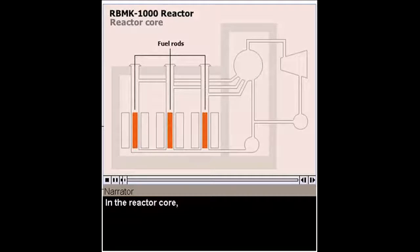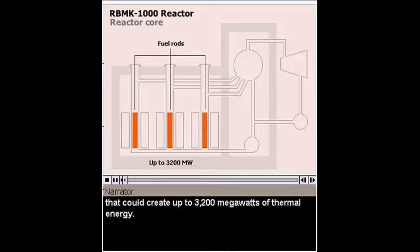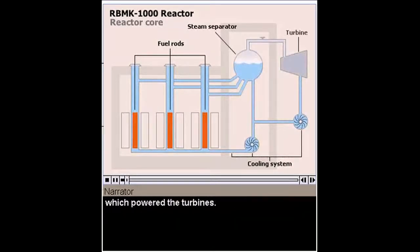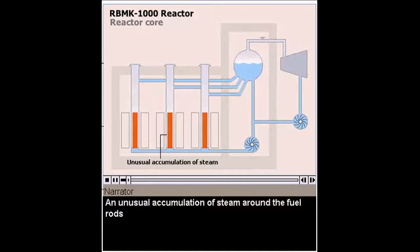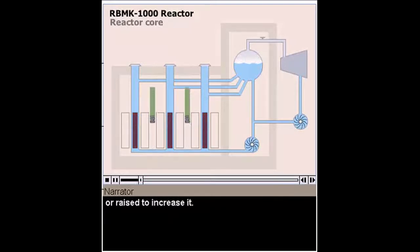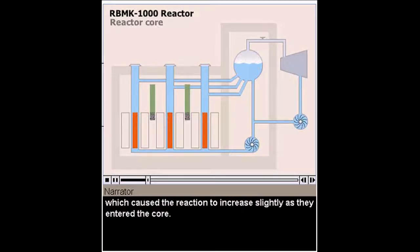In the reactor core, uranium fuel rods produced a self-sustaining fission reaction that could create up to 3,200 megawatts of thermal energy. Heat in the core turned water from the cooling system to steam, which powered the turbines. An unusual accumulation of steam around the fuel rods could quickly increase the nuclear reaction to dangerously high levels. Clusters of control rods were lowered into the core to slow the reaction or raised to increase it. These rods had tips made of graphite, which caused the reaction to increase slightly as they entered the core.